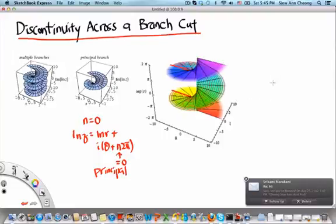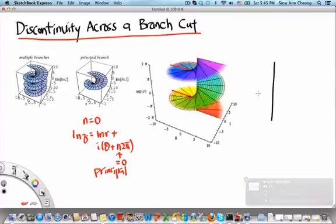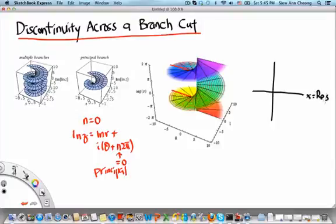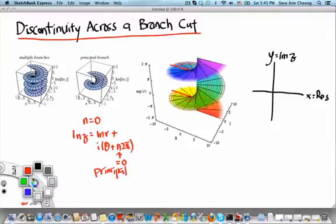When you view the branch cut on this Riemann surface, nothing seems wrong. But if you view it on the complex plane, where we have x is the real part of z and y is the imaginary part of z, then what we find is this. So let me first throw in the branch cut. In this case, the branch cut is introduced along the negative real axis.